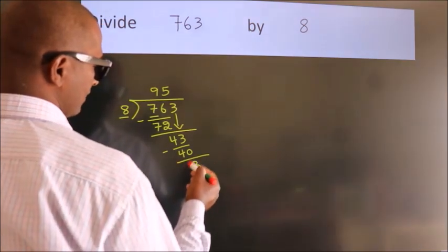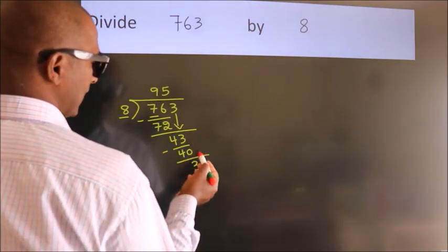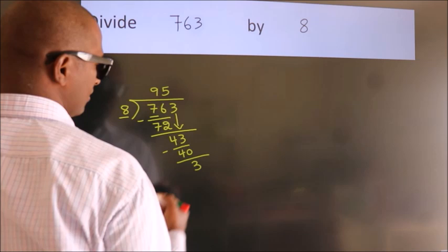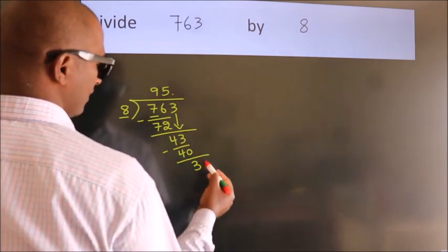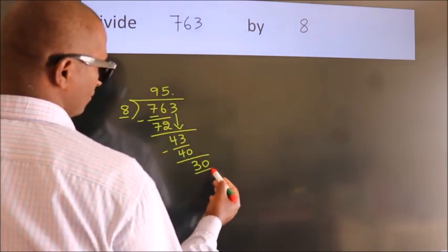After this, no more numbers to bring down. So, what we do is we put a dot and take 0. So, 30.